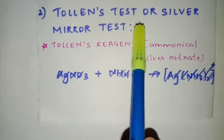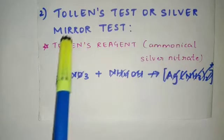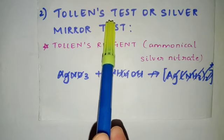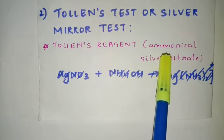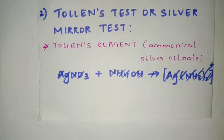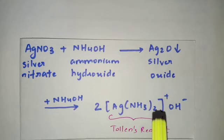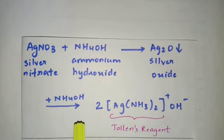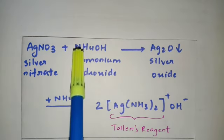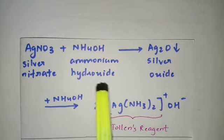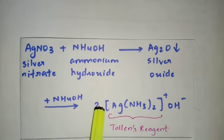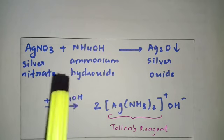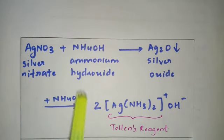The second one is Tollen's test, or silver mirror test — you will come to know why it is known as the silver mirror test. In Tollen's test, the Tollen's reagent we are using is nothing but ammonical silver nitrate. Before teaching you the main reaction, you should know what is the structure of Tollen's reagent. Note that there is no need to study the preparation reaction — it is not in your textbook.